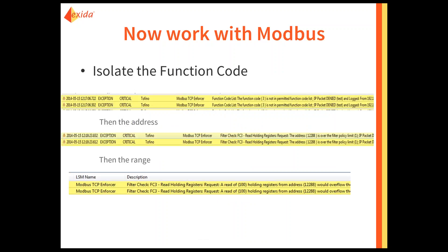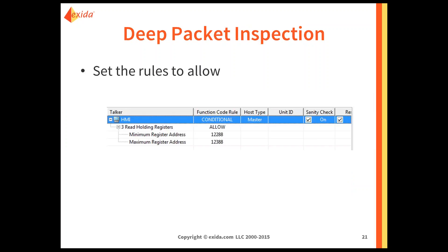Once we send it to the enforcer module, we have to account for the same information as we did for the Moxa. The first thing we need to know is the function code. Then we need to know what addresses are being accessed by that function code, and how many of them. The Tofino will give you all this information as you step through. You should know it in advance — you should know what your control system is trying to do. The devices you're putting on the network can help you get there, but that's no replacement for knowing the functionality of your system. So we go into the deep packet inspection or enforcer module of the Tofino, specify the HMI as the communicating device, select function code 3, tell it the registers it's allowed to communicate with, and it's up and running.